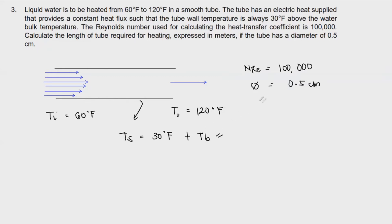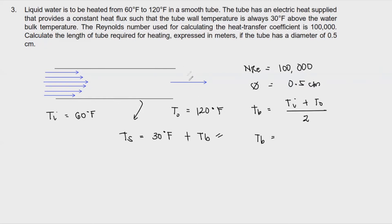The bulk temperature is simply the average of our inlet and outlet temperatures. When we solved gaseous-phase problems, we used the film temperature — the average of the surface and free-stream temperatures. For liquids, we use the bulk temperature instead, which is the average of the inlet and outlet. Don't confuse these two terms.